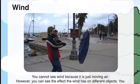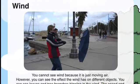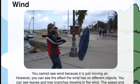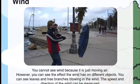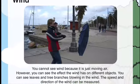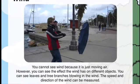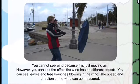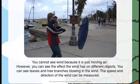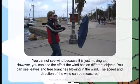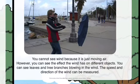Wind. You cannot see wind because it is just moving air. However, you can see the effect the wind has on objects. You can see the leaves and tree branches blowing in the wind. The speed and the direction of the wind can be measured.